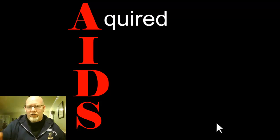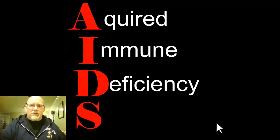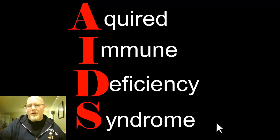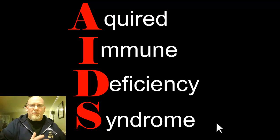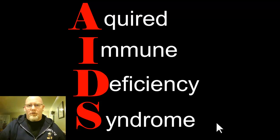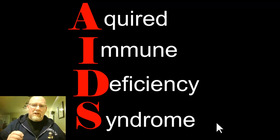The A in AIDS refers to the word acquired — it means you catch it, you're not born with this genetically. Babies can be born with HIV or AIDS, but it typically means they acquired it from their mom. The I refers to immune, D is deficiency — immune deficiency. And then it's a syndrome. A syndrome means there's a variety of things that can happen; it doesn't look the same in every single person. One person looks perfectly normal, another looks deathly ill, and there are all kinds of examples in between. So HIV, the germ, causes a condition we call AIDS: acquired immune deficiency syndrome.